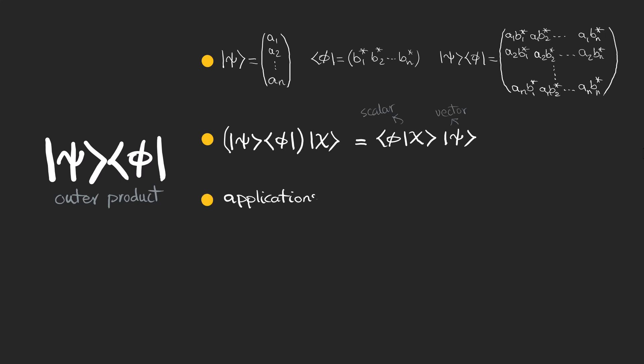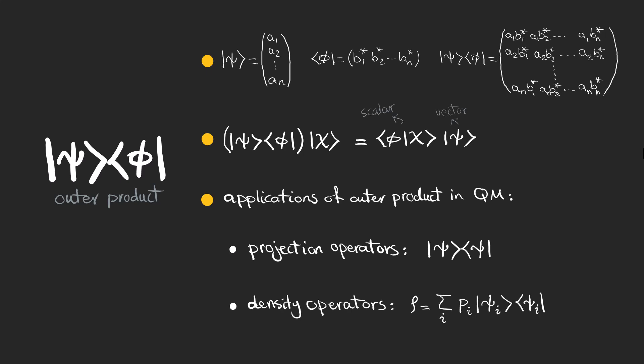The outer product has many applications in quantum mechanics. One of them is projection operators. We can project any state onto psi by applying this operator. Another one is the density operator. We use this notation to talk about mixed quantum states. Pi is the probability associated with each psi, and we are going to talk about them in details later.